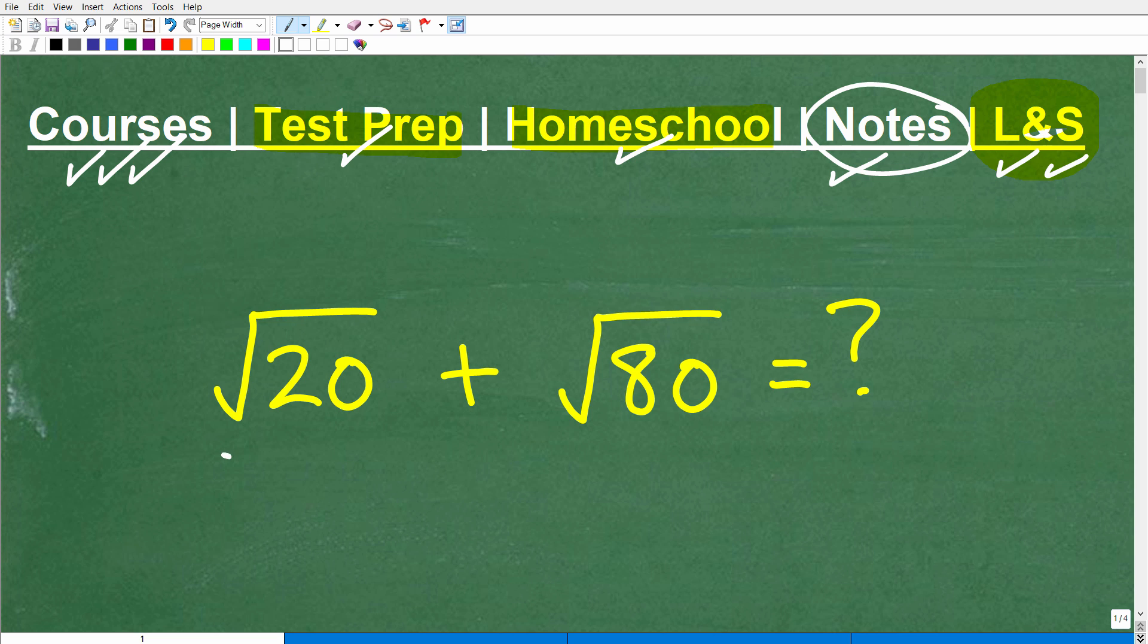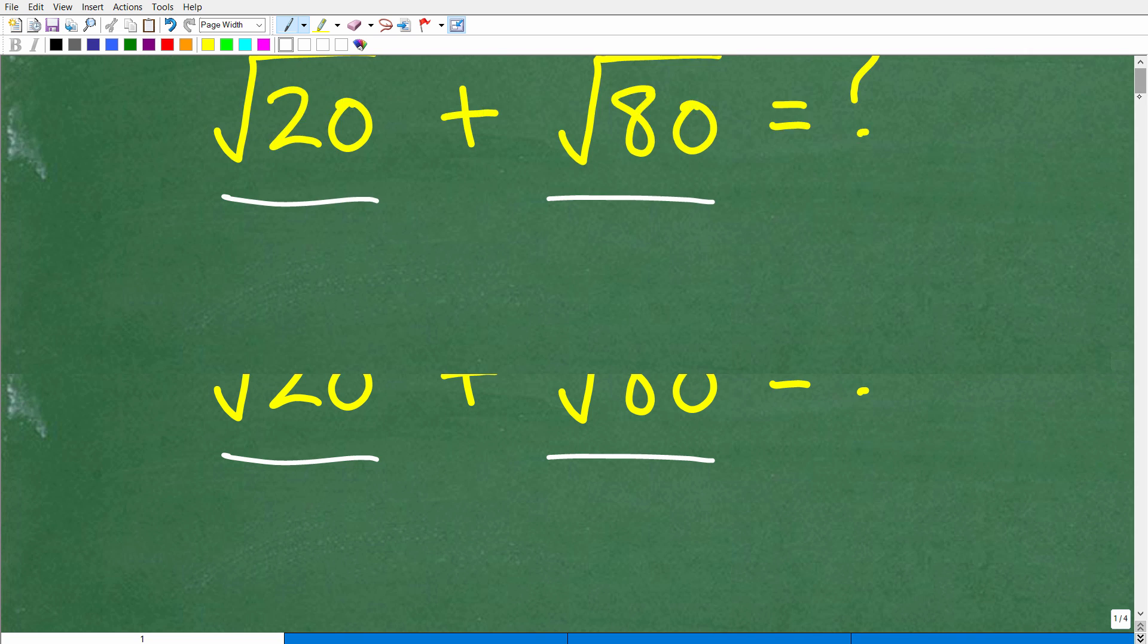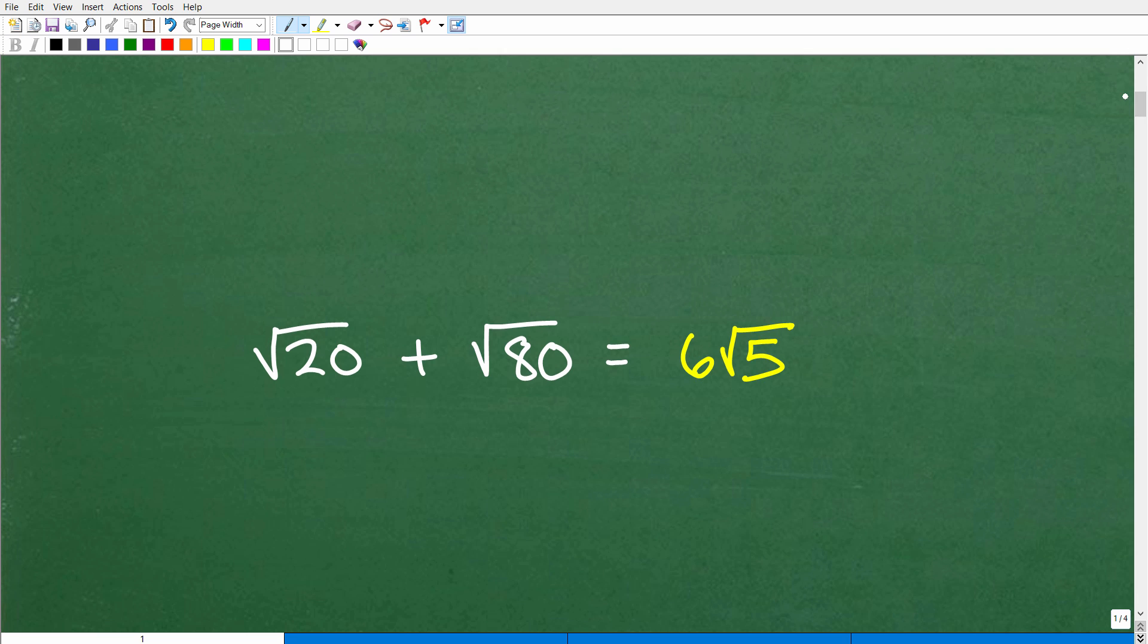Okay, so let's get into this. The square root of 20 plus the square root of 80. Here is the answer. And there you go. The answer that we want in terms of algebra is 6 times the square root of 5.